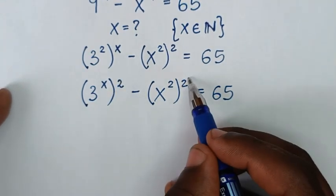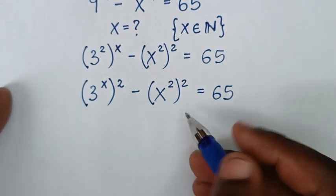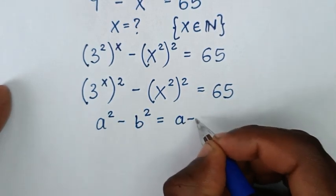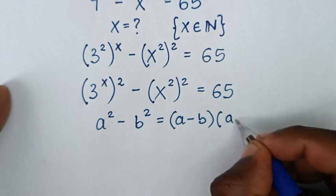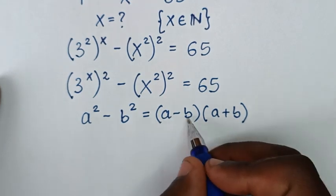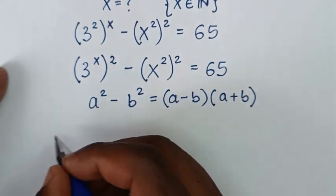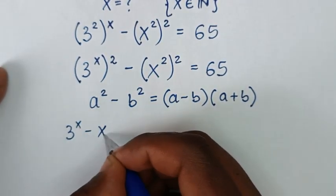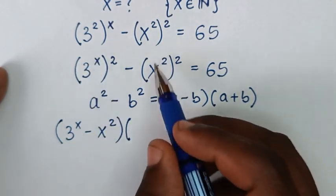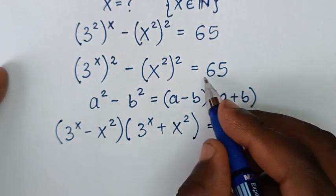From here, we have square outside the bracket minus square outside the bracket. This is the difference of two squares, so we'll apply the difference of two squares rule: a squared minus b squared is equal to (a minus b)(a plus b). By applying this form here, it will be (3 power of x minus x squared) times (3 power of x plus x squared) is equal to 65.